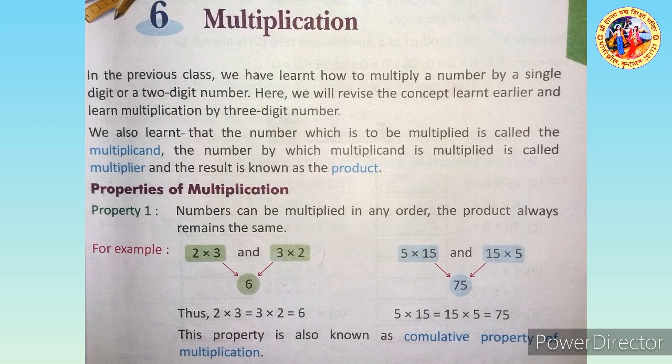Three into two is equal to six. Five into fifteen is equal to 75, or 15 into five is equal to 75. The product of three or more numbers does not change even if the grouping is changed.